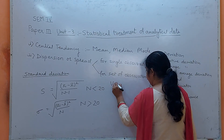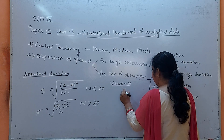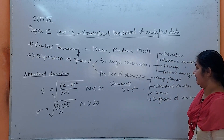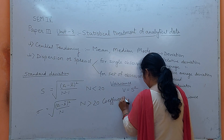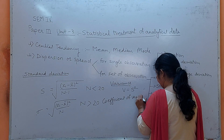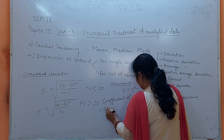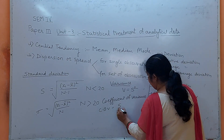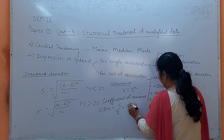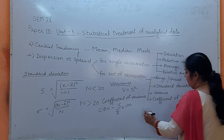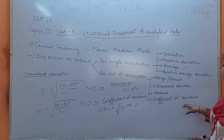Next is variance, which is nothing but the square of standard deviation. After that, coefficient of variance (COV) equals standard deviation (s) divided by mean (x̄), and it is generally expressed as a percentage — that is, (s divided by x̄) multiplied by 100.